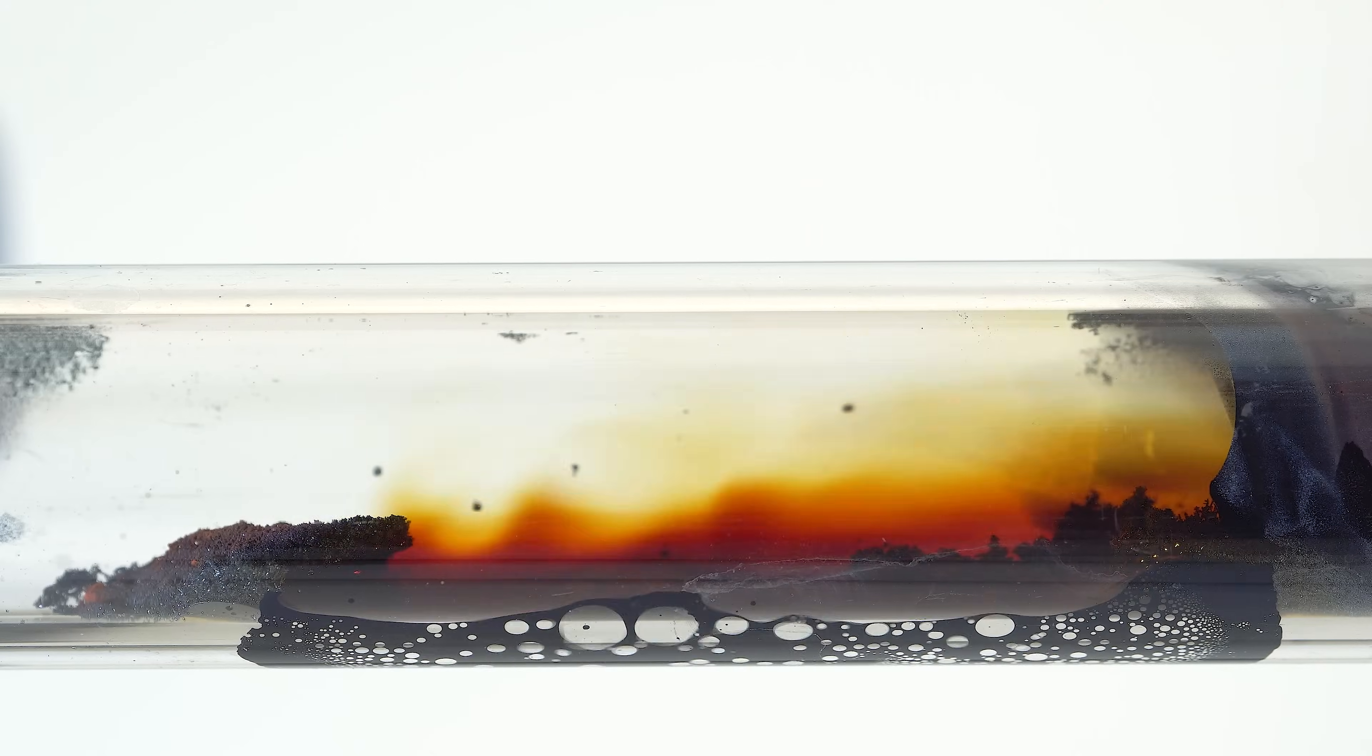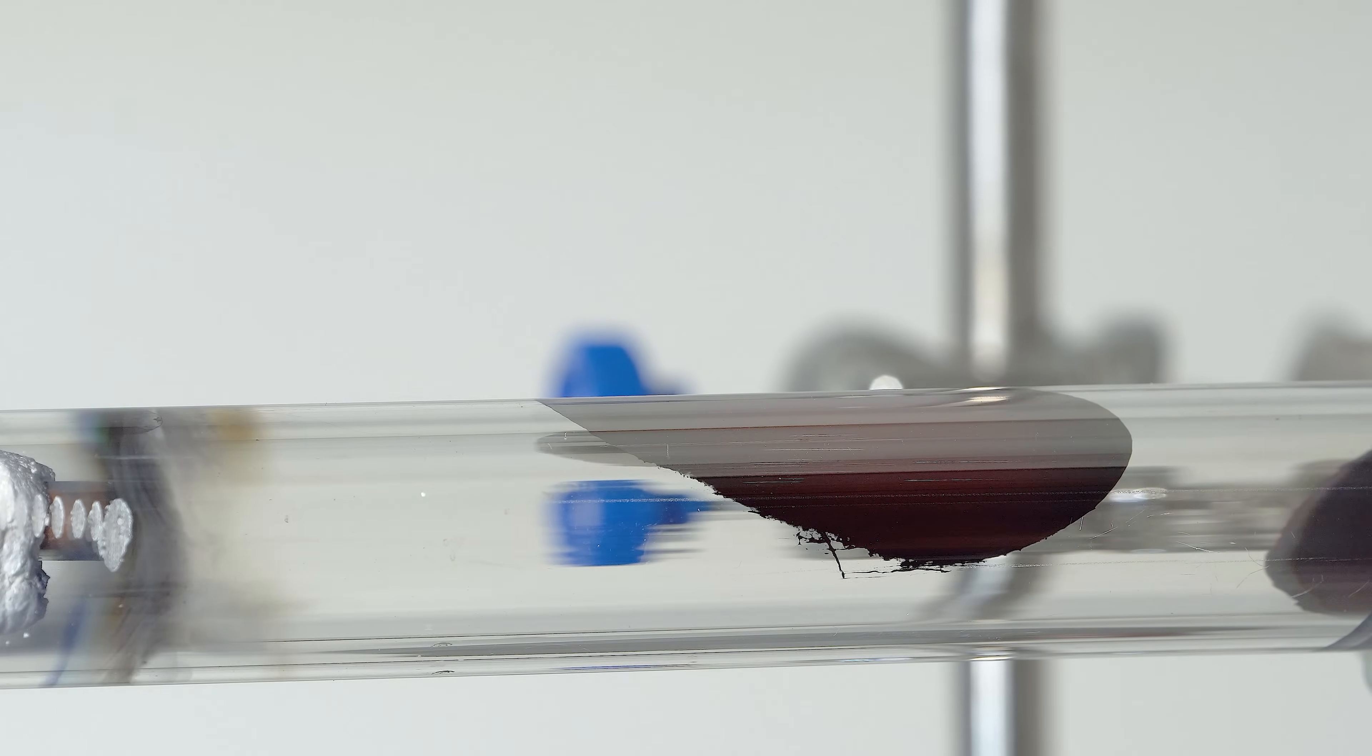Unlike the reaction with tungsten hexacarbonyl, this process generates several by-products that the gas flow carries away. The blue smoke comprises lower tungsten oxychlorides, which readily form upon contact with atmospheric oxygen due to the highly heated chlorides emerging from the tube. Now I am heating only the lower part of the tube, and tungsten is deposited only in this area.